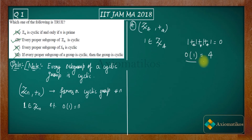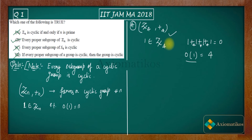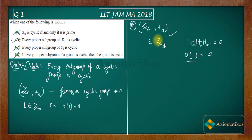Since we found an element whose order equals the order of the group, this element generates the entire group. Recall: a group of order n is cyclic if there exists an element of order n. So Z4 is cyclic even though 4 is not prime. Therefore option A is incorrect.